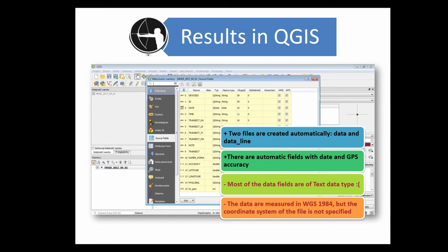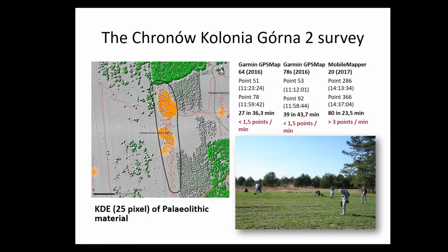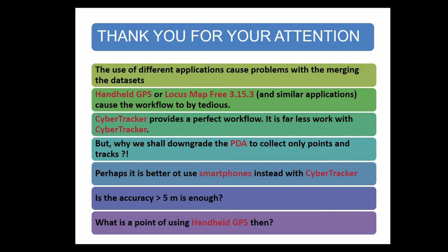As you can see here, the pace you can work at is comparable with the handheld GPS — of course accounting for distance walked and line length. This example area shows the wood location and the exact location of sites, which is the goal of our project. When we used different applications there was a problem merging the datasets because of different data types and different attributes. Using applications such as Locus to collect was, when compared to CyberTracker, very tedious — a lot of work.